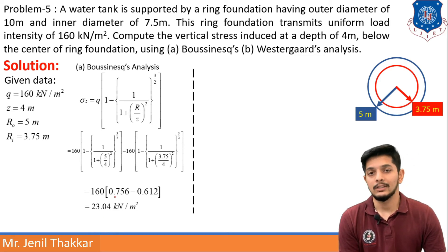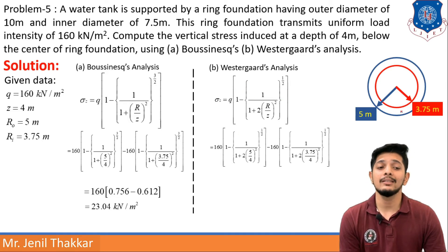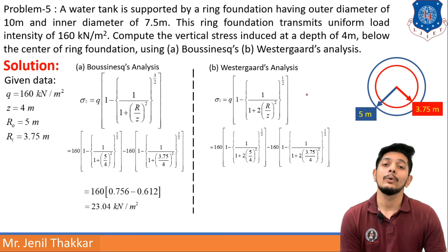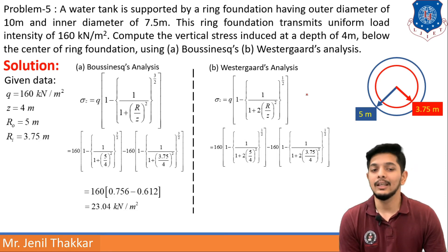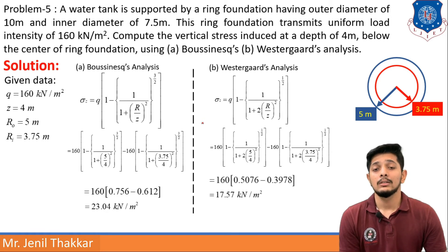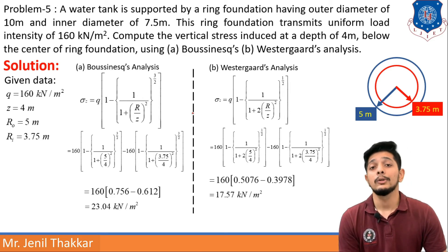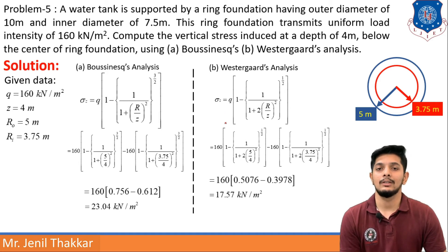Now let us find it from Westergaard's formula. It should also be divided into two portions using Ro (outer) and Ri (inner). Putting outer diameter first and then inner diameter so the value stays positive, σz from Westergaard's = 17.57 kN/m². Boussinesq and Westergaard values will vary — don't worry about the variation, just calculate and put it in the answer.